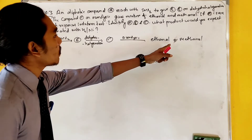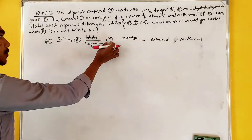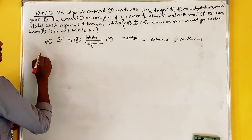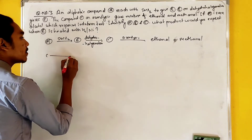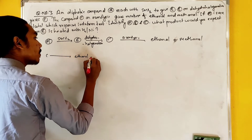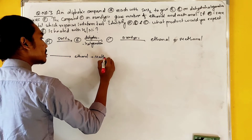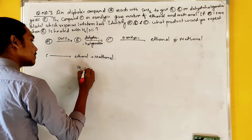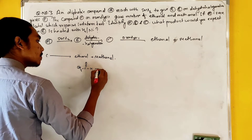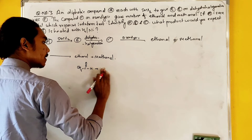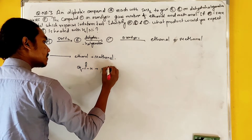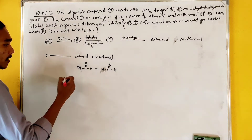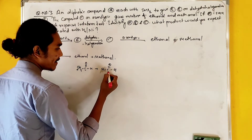This compound gives ethanal and methanal from ozonolysis. Ozonolysis is the formation step. So compound C gives: H3C double bond H plus HC double bond H. Carbon number one, two, and three.